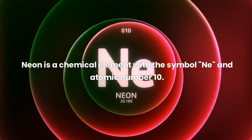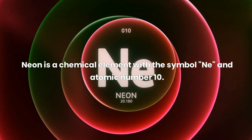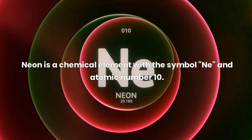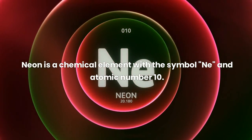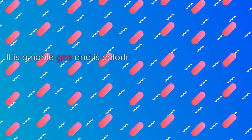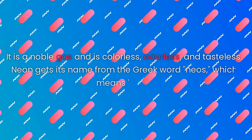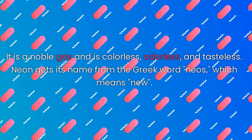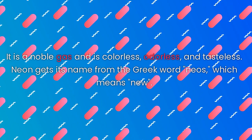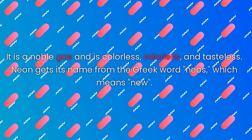Neon is a chemical element with the symbol Ne and atomic number 10. It is a noble gas and is colorless, odorless, and tasteless. Neon gets its name from the Greek word neos, which means new.